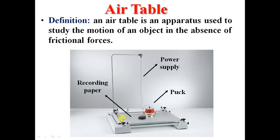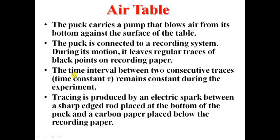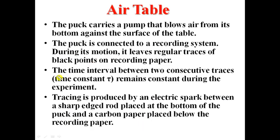This puck moves along this surface. As it moves, it leaves dots. These dots represent the position of the puck as it moves. Now, the time separating two consecutive dots is constant and can be adjusted. This constant is called the time constant. The puck is connected to a recording system. During its motion, it leaves irregular traces of black points on the recording paper. The time interval between two consecutive traces, which is called time constant, remains constant during the experiment.